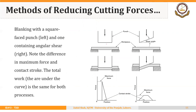For single-station dies, applying shear — either single or double — to the punch or die is a practical solution. Without shear on the punch, the maximum force required is quite high; once shear is applied, the maximum force reduces dramatically. Comparing blanking with a square face punch versus one with angular shear, the maximum force differs greatly, though the total work (area under the force-stroke curve) remains the same for both.